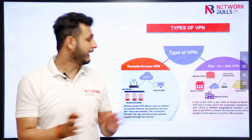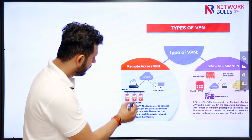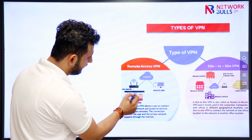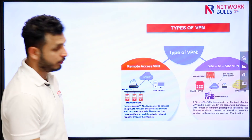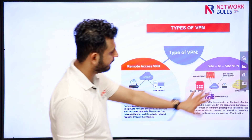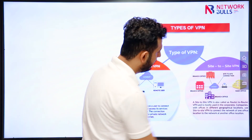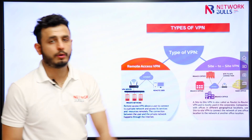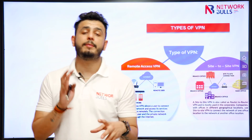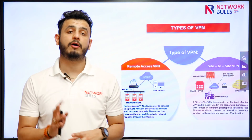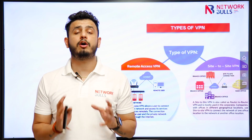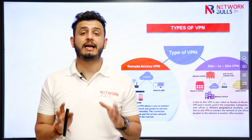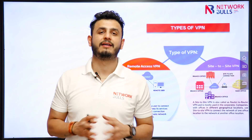As you can see in the diagram, this is the remote user, this is the site, and these are the servers that the user wants to access. In the case of site-to-site VPN, we can see different sites connected through the internet and communicating with the help of VPN. In this video, we have discussed what VPNs are and the different types of VPN. Thank you.